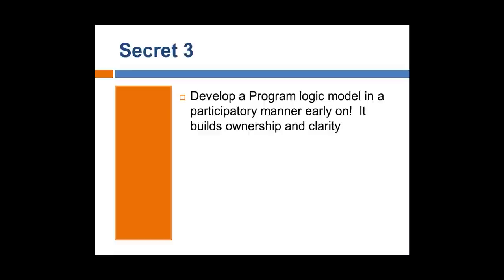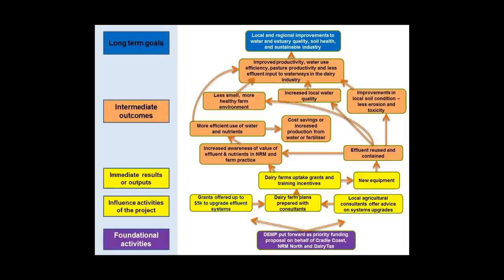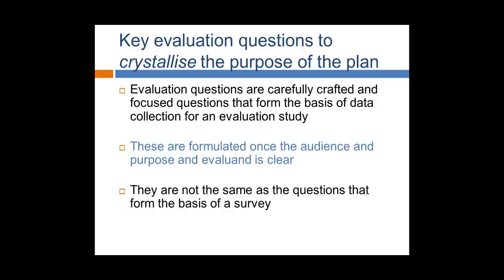Secret number three: develop program logic together in a participatory manner. The benefits are huge — it builds ownership for the individual and for the team, and clarity about what you're trying to do. It lays out a fabulous canvas from which you can develop your indicators. I find it very hard to develop M&E without a good program logic. Here's an example — they tend to work upwards with long-term goals at the top and activities at the bottom, with intermediate outcomes in between and arrows going in different directions — this one is for a dairy effluent program. It's not a one-on-one matrix relationship; there are arrows going in different directions.